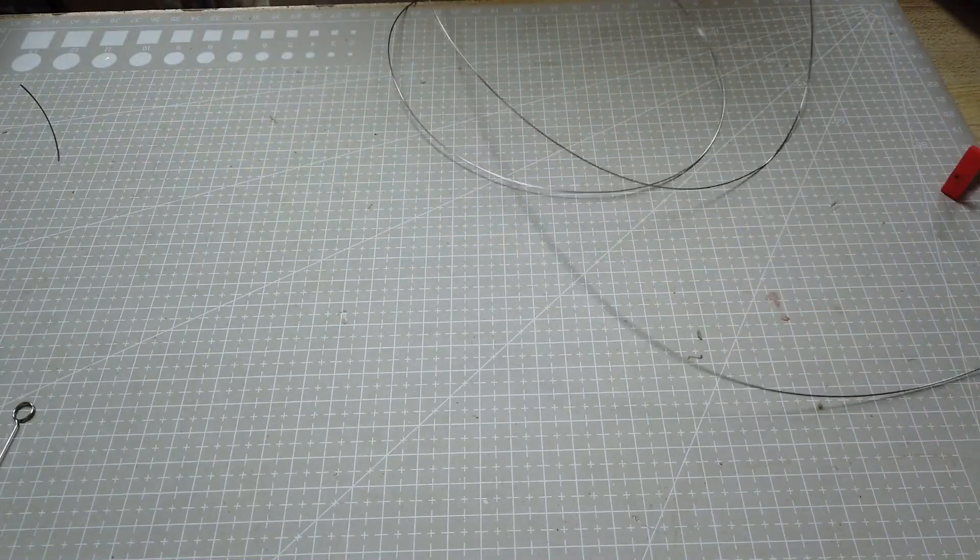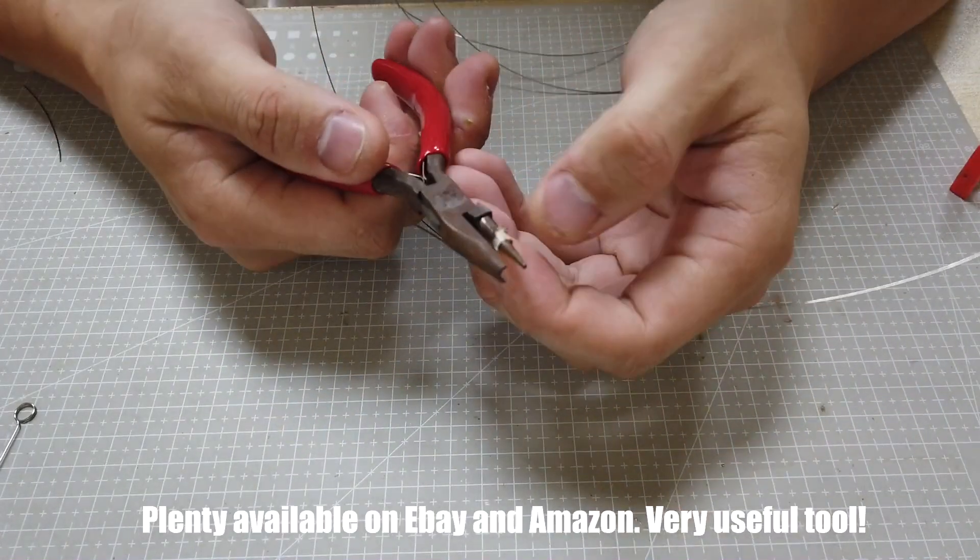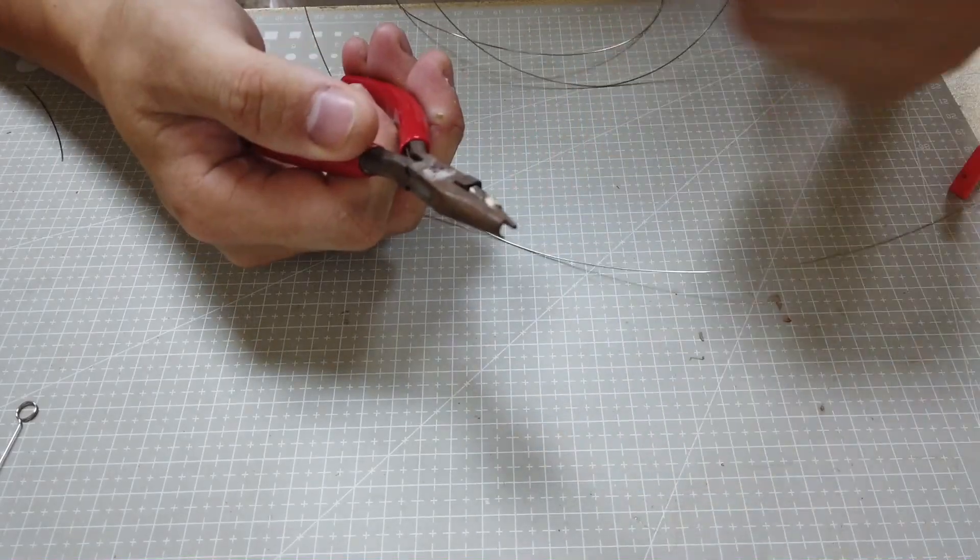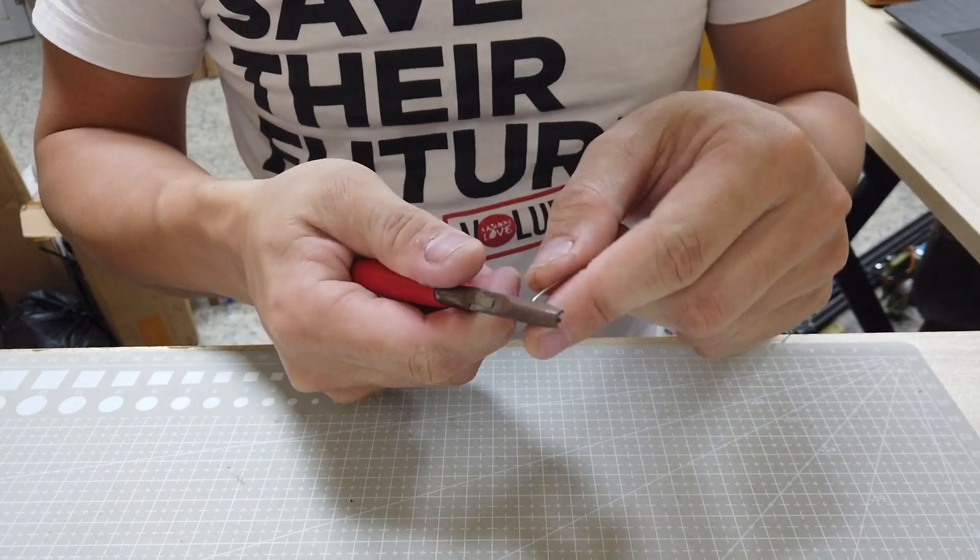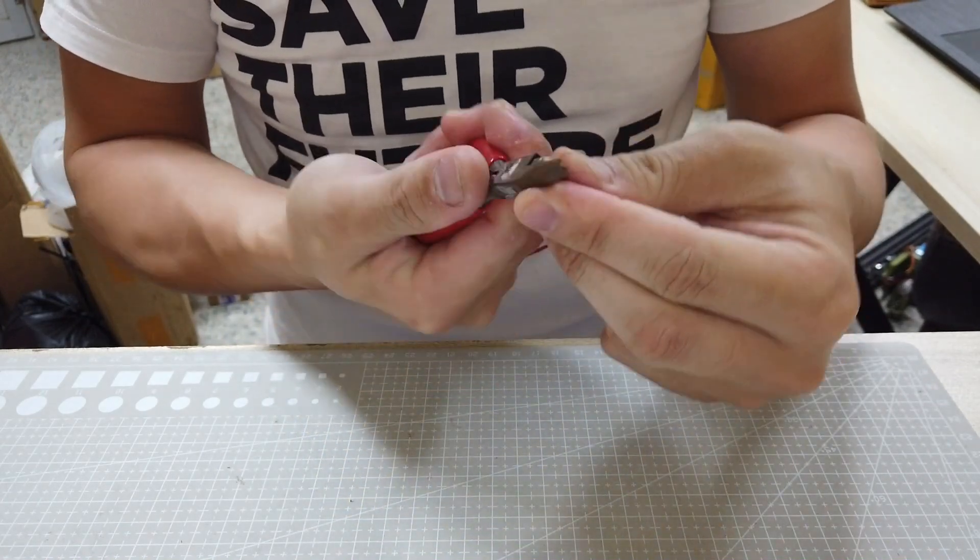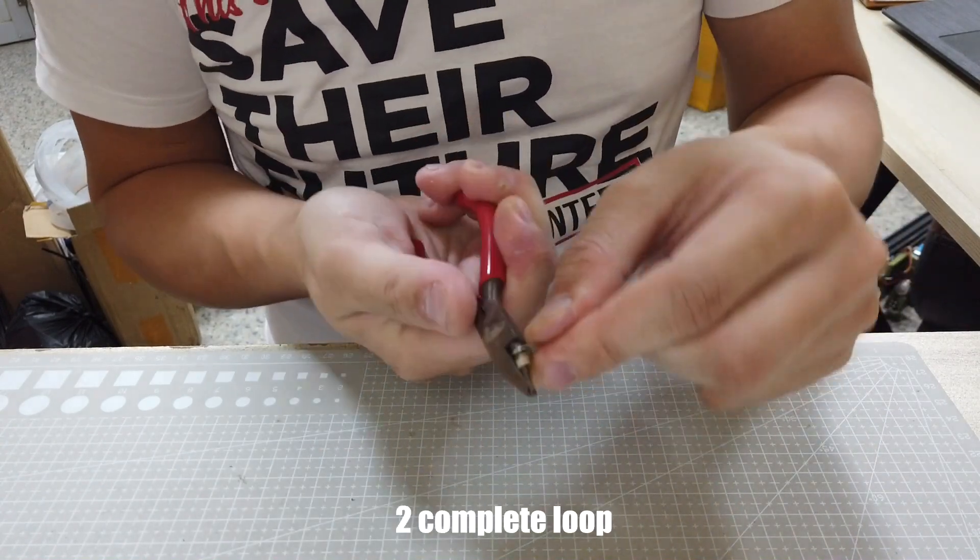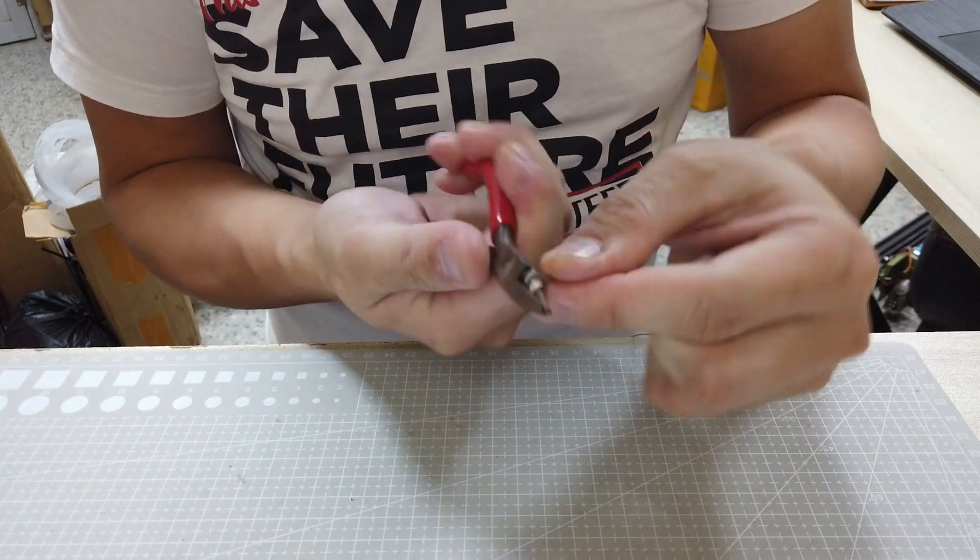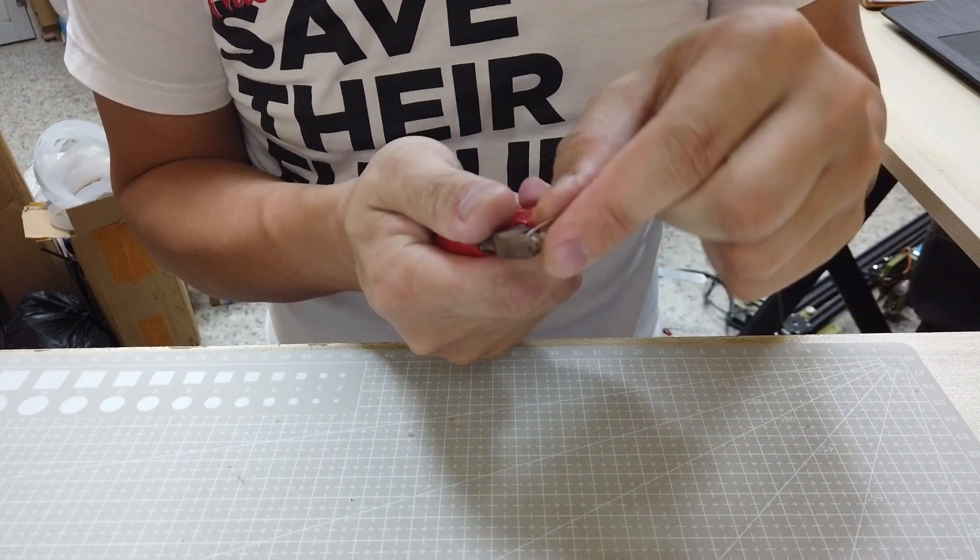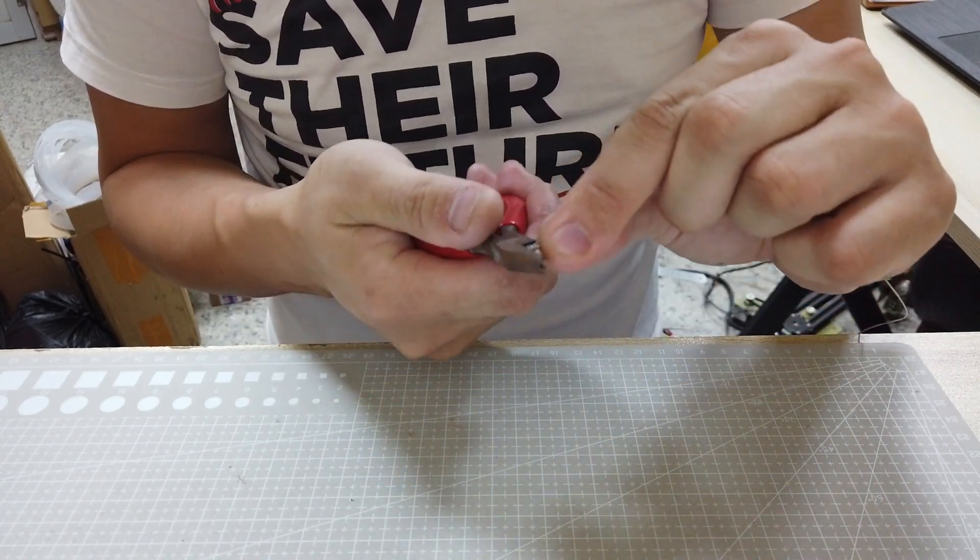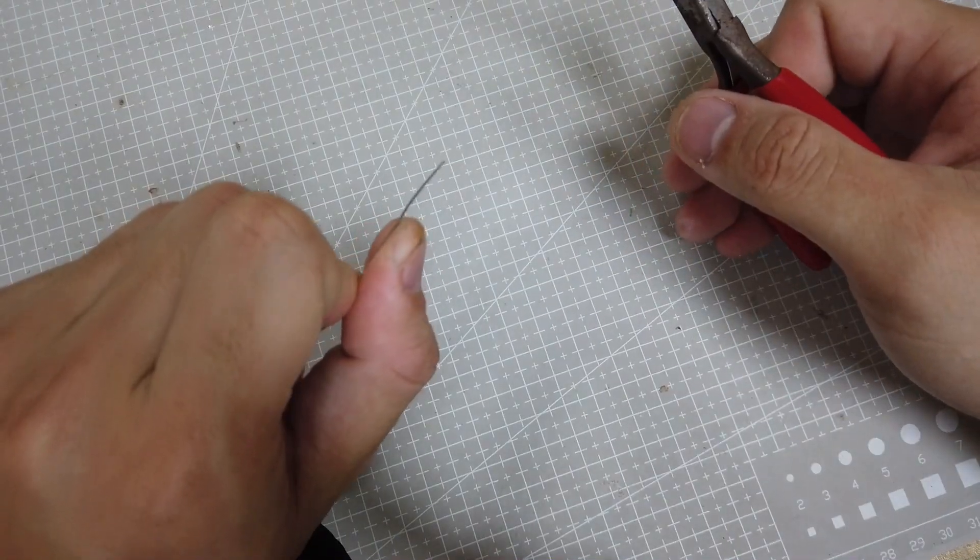And then the next tool you're going to need is, this is called a wire looping plier. And then also I'll apply a masking tip over here as a reference. The first thing I'm going to do is slide it in from here like this. I'm going to make two full loops. There you go. Let me show you from another direction.